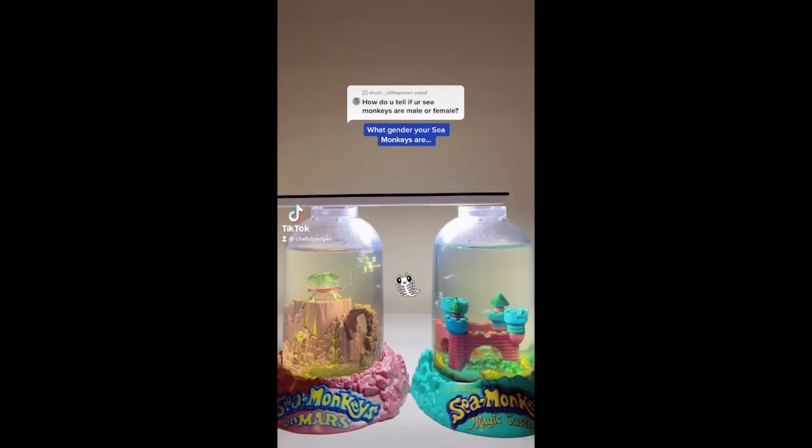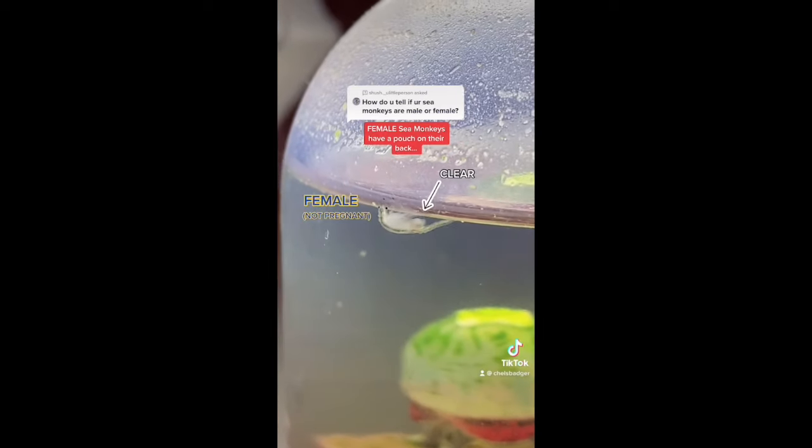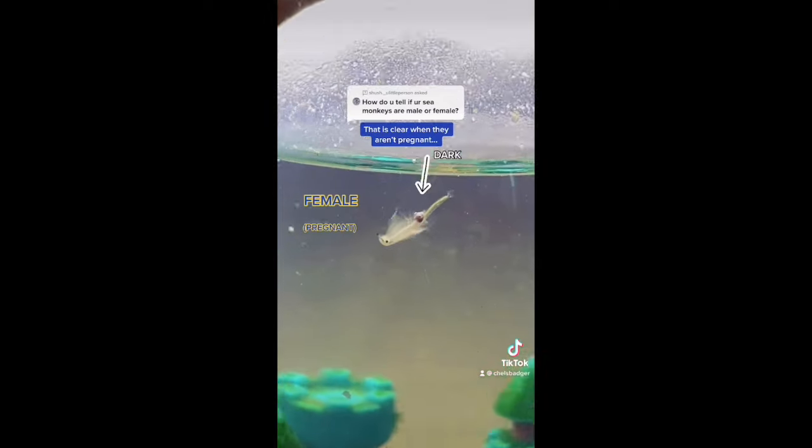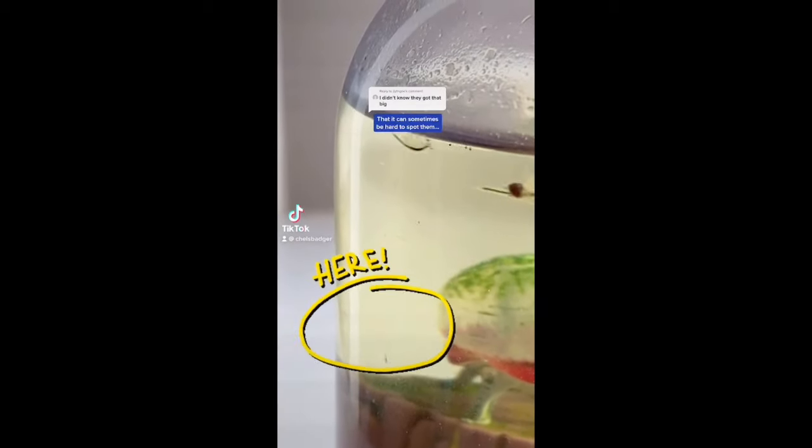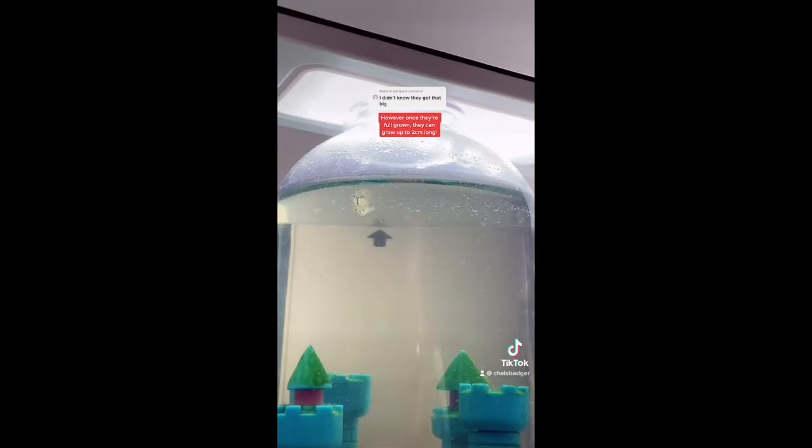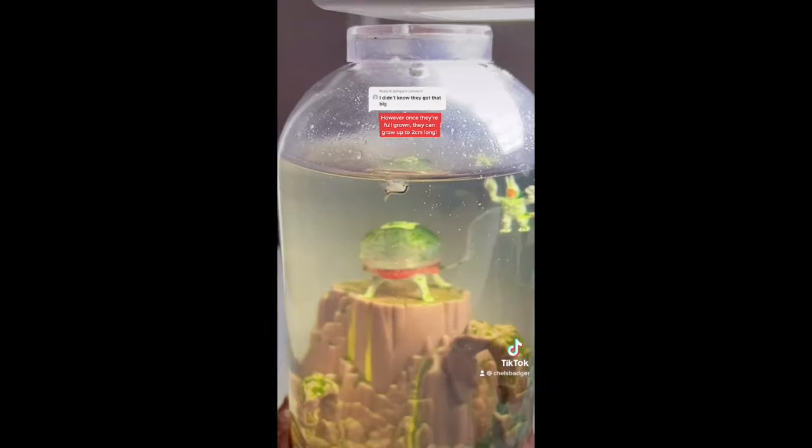This is the easiest way to know what gender your sea monkeys are. Female sea monkeys have a pouch on their back that is clear when they aren't pregnant and dark when they are pregnant. Whereas male sea monkeys have clasps above their head which look like tiny little horns. Sea monkey babies are so small that it can sometimes be hard to spot them. However, once they're fully grown they can grow up to two centimeters long.